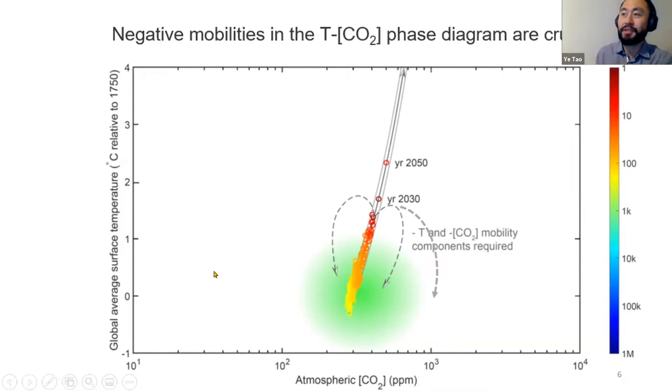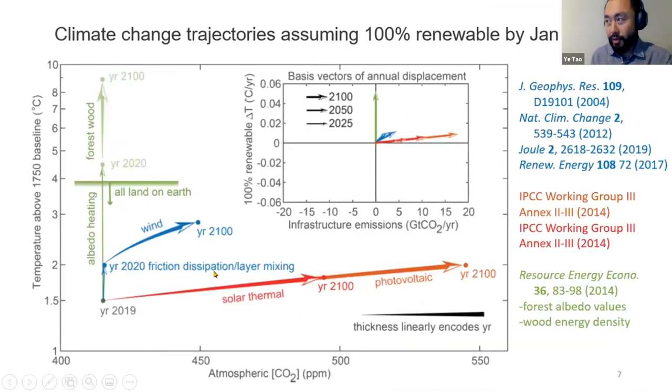Two years ago, we pointed out that while renewable energies are important and we should continue to work on them, we shouldn't think that just becoming renewable will solve the climate problem. All they do is stop increasing CO2 very quickly and slow down the rate of warming. But intrinsic climate dynamics are such that there is already baked-in warming of the order of one to two degrees Celsius.